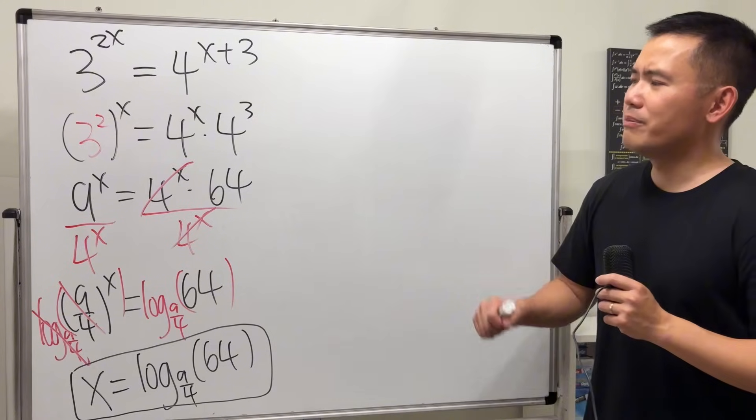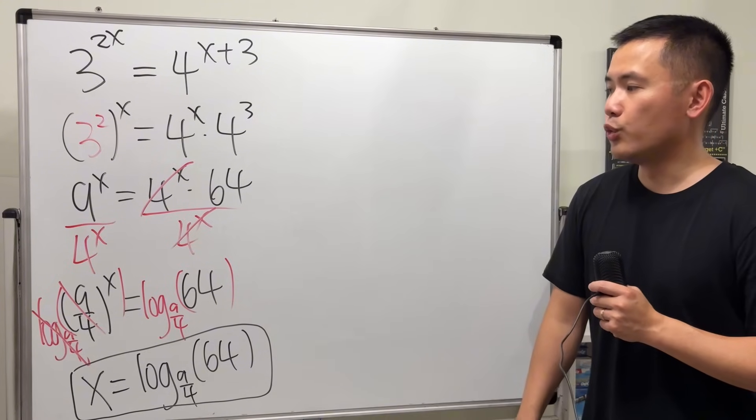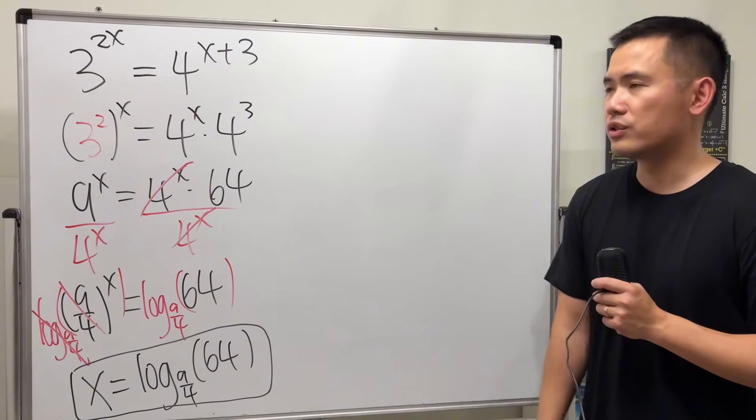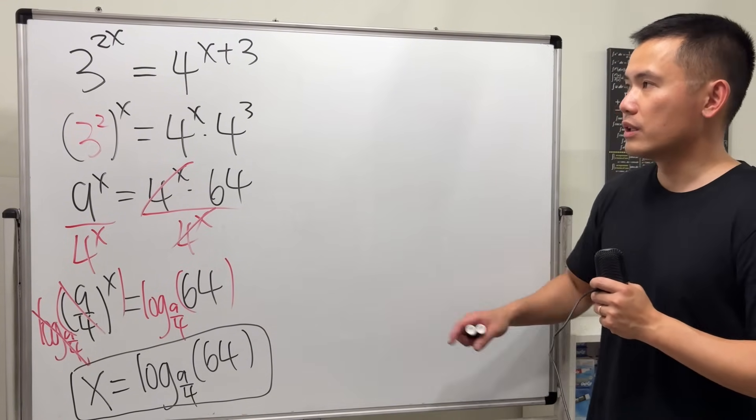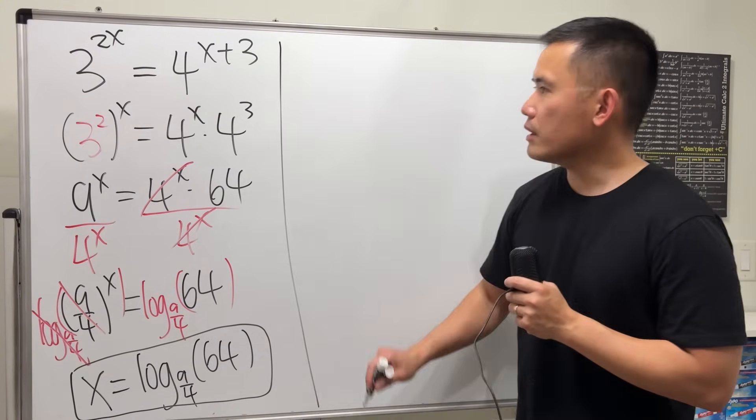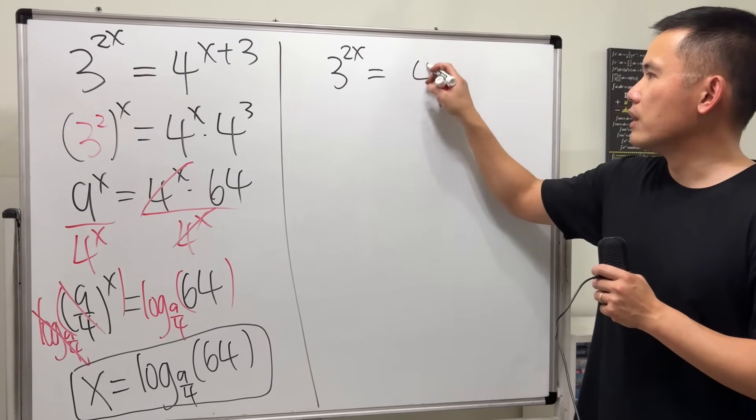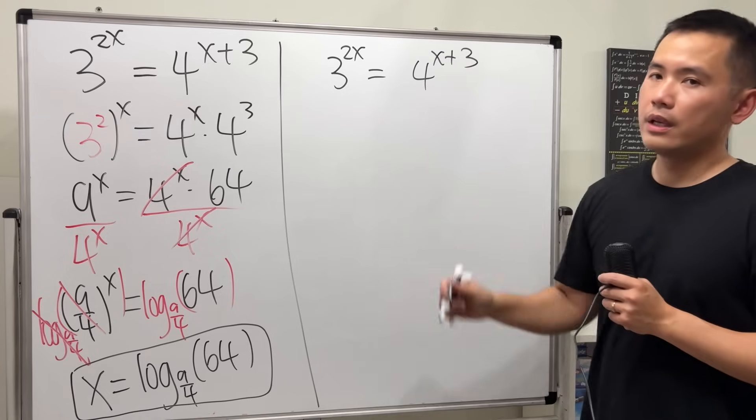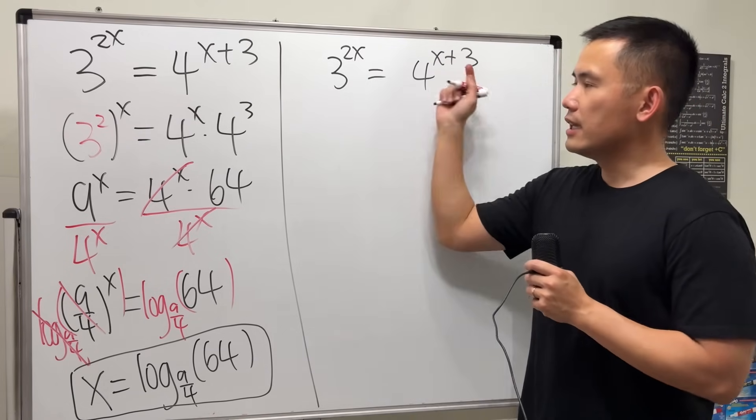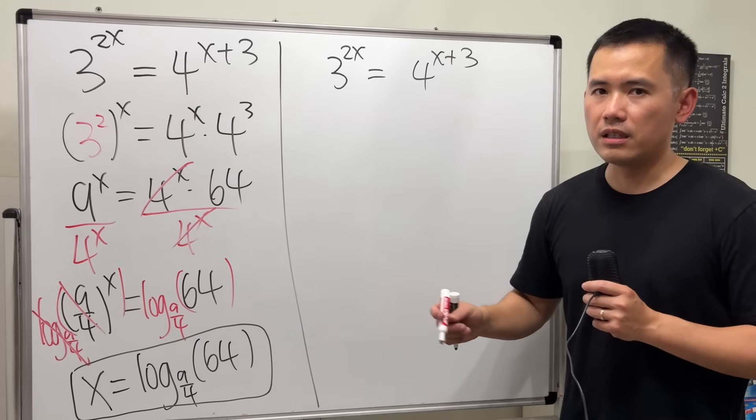However, I think this right here might not be the way that you will be exposed to how to solve an equation. I think this is more of the standard textbook way, so let me show you that as well. So start with 3^(2x) = 4^(x+3). If you have x in the exponent, you can just proceed by taking a log on both sides.